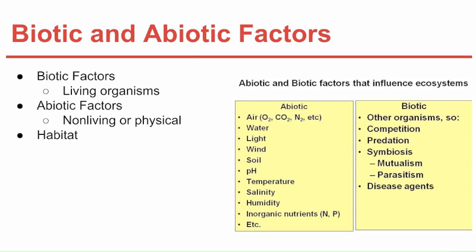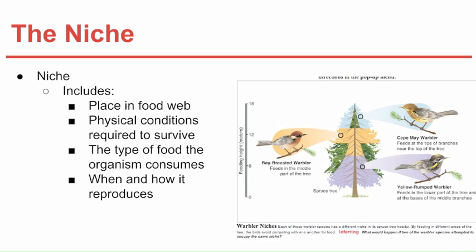Here is a list of the abiotic and biotic factors. The niche includes the full range of physical and biological conditions in which an organism lives and the way in which the organism uses those conditions. This includes its place in the food web, the physical conditions of the ecosystem required for the organism to survive, the type of food it consumes and where it can get food, and when and how it reproduces in the ecosystem.